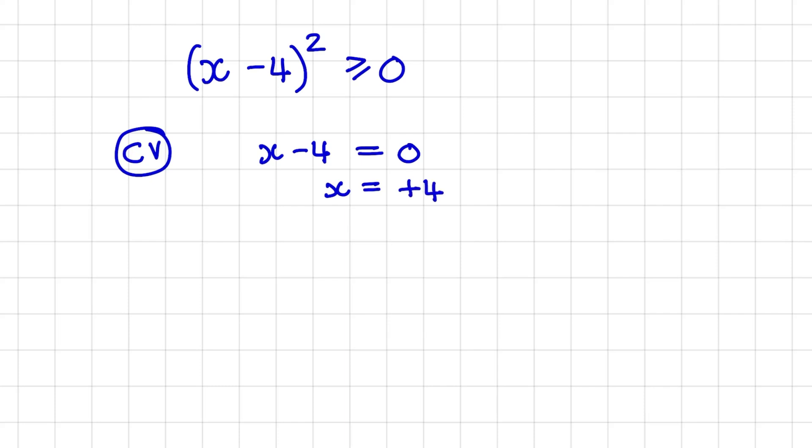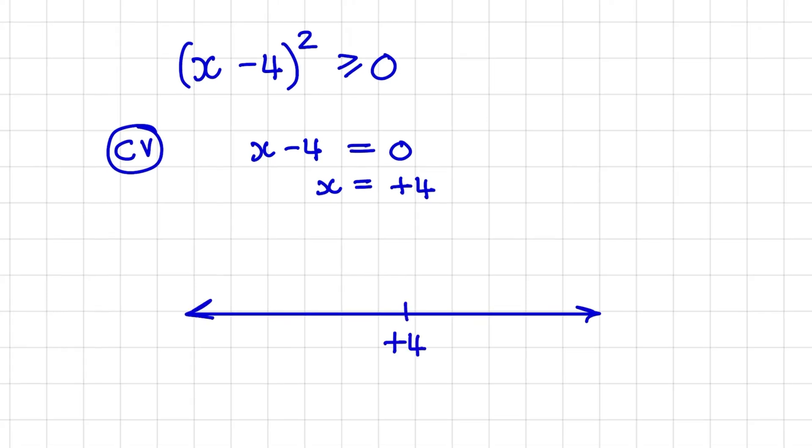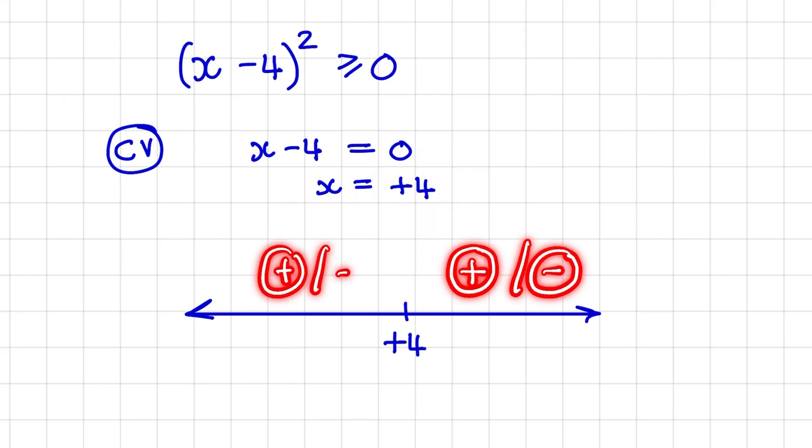And if we follow the same pattern as before, we can plot this value on a number line. But what is different in this video is that we only have one critical value. We want to determine whether the equation is negative or positive to the left and right of our critical value.